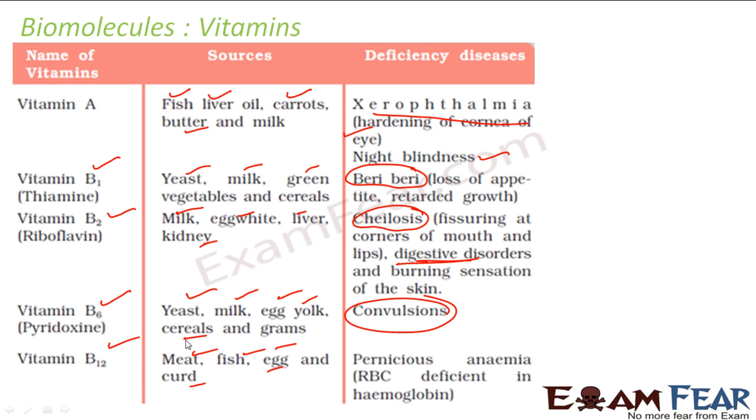Vitamin B12 - fish, meat, egg and curd. If you don't take this, you get pernicious anemia.